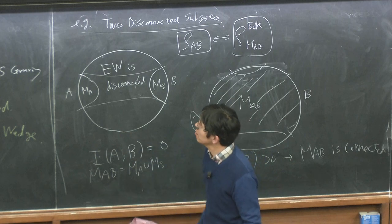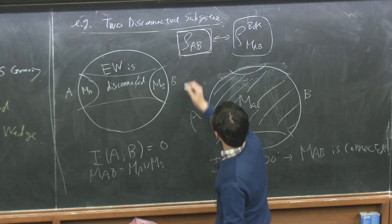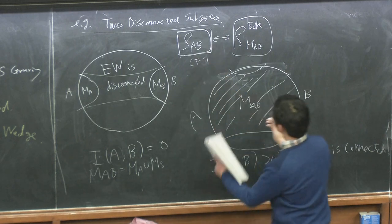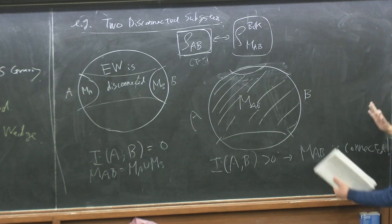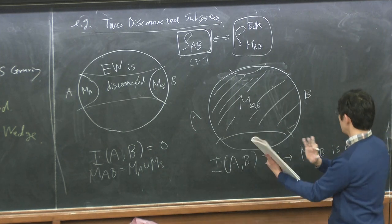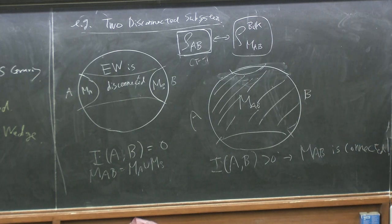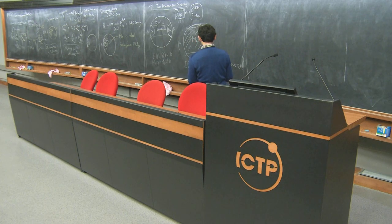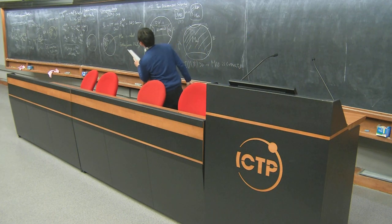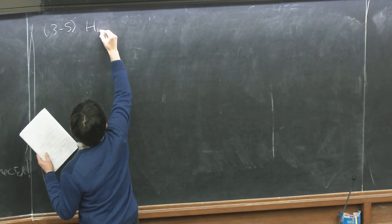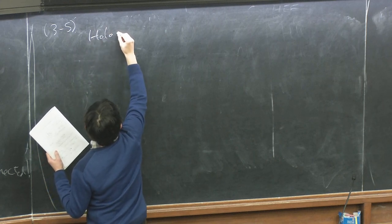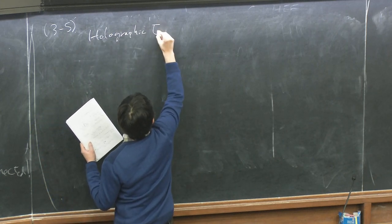According to this claim, rho_{AB} in the CFT is dual to this region called the entanglement wedge. This leads to the idea of so-called holographic entanglement of purification.